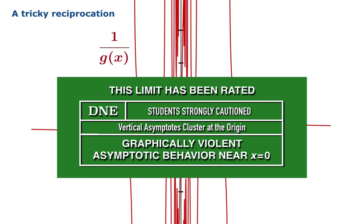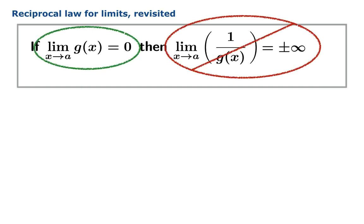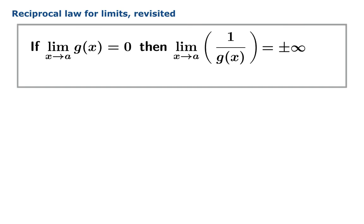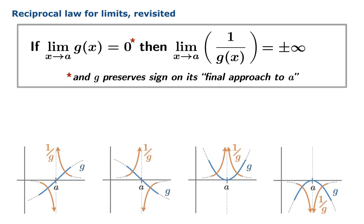So why do we go to the trouble of looking at this example? Intuitively, we would love to be able to say that this is a limit law: if the limit of a function is zero, then the limit of the reciprocal should be either plus or minus infinity. But we just saw an example of a function where despite the fact the limit was zero, the limit of the reciprocal was not infinity or negative infinity — that limit simply did not exist. If we want to salvage this intuitively pleasant law, we need to throw in an asterisk. It's not just that the limiting behavior is zero; we have to declare that g also preserves sign on its final approach to the argument in question. We have to guarantee that it doesn't go through zero and switch signs so often that it introduces the kind of crazy behavior we just saw. If we throw in that caveat, then it is in fact the case that there are essentially four possibilities and we recover this nice limit law.